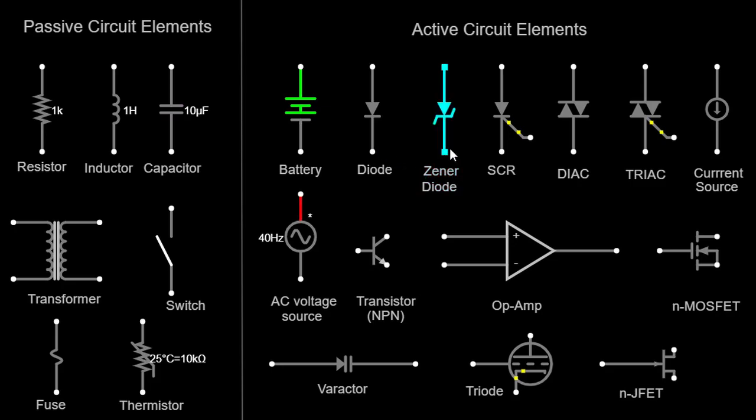Zener diode. A Zener diode is a specialized type of diode that is designed to operate in the reverse breakdown region. It is used for voltage regulation and protection against voltage spikes. Zener diodes are represented similarly to regular diodes, but with a bent line on the cathode side.